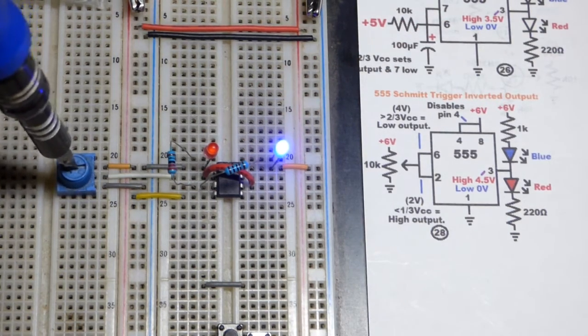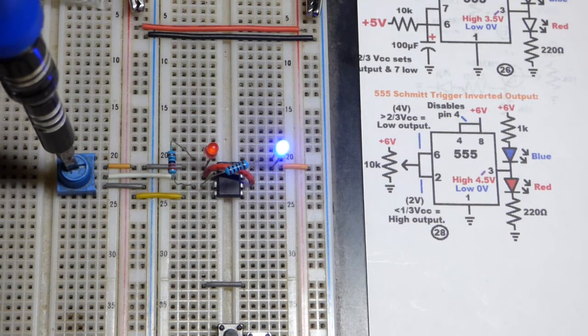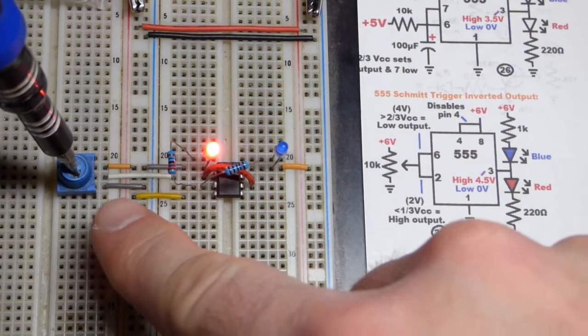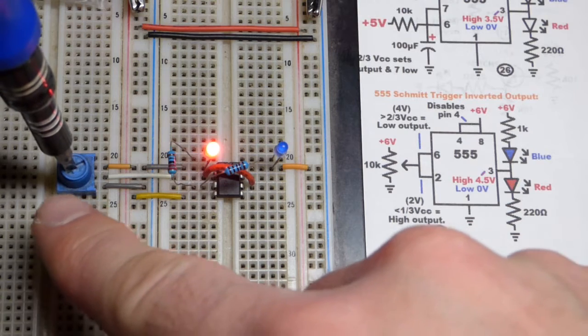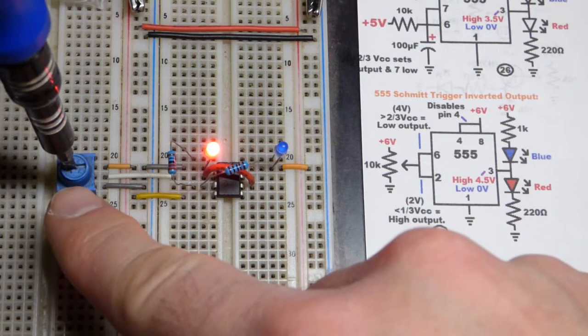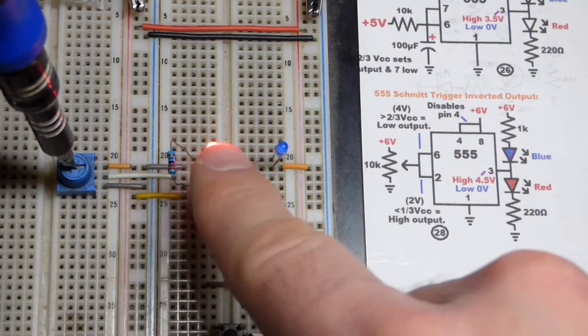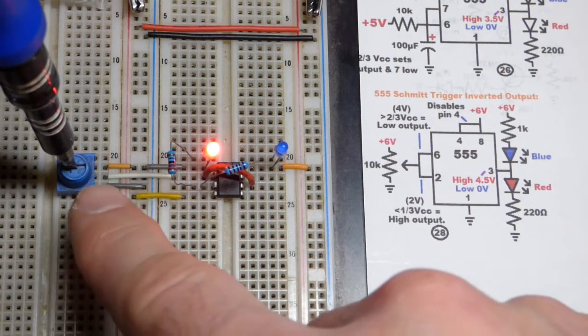So we know the output's low. That means to set it high I have to lower the voltage of the trim pot right there. Now we're going right back to the spot basically that it was before when it was low. You can see that nothing changed, it's still high.